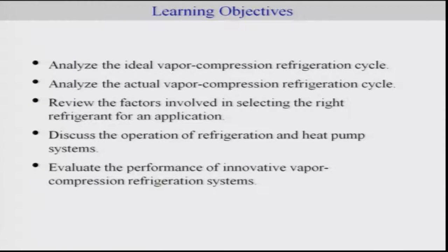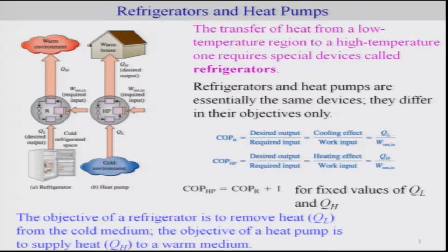Let me first start with the definition of the refrigerator and heat pumps. The refrigerator basically comes from the fact that its utility is to transfer heat from a low temperature region to a high temperature region. It cannot be done due to the second law constraints, and hence you need a specific device — that is your refrigerator.